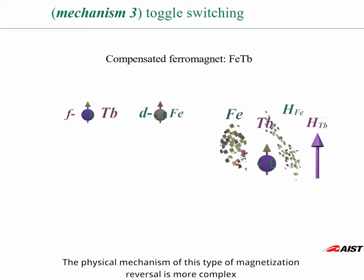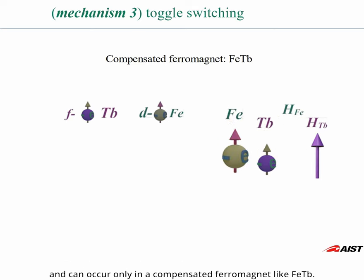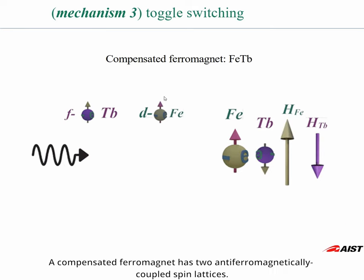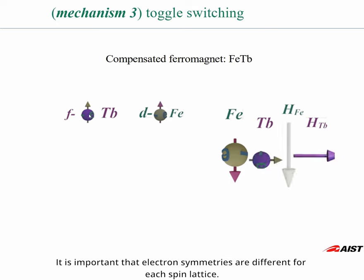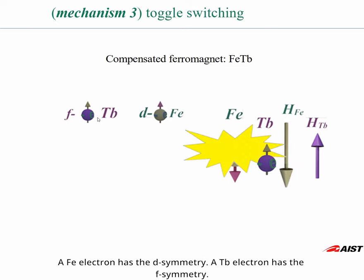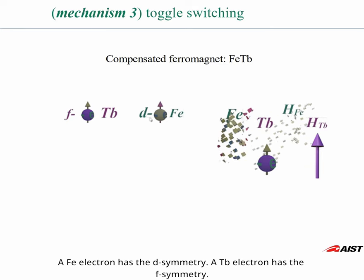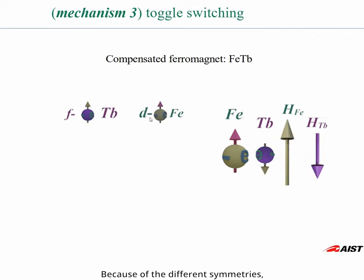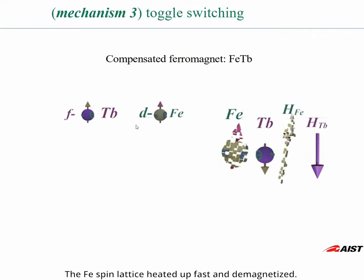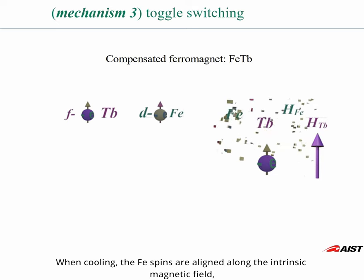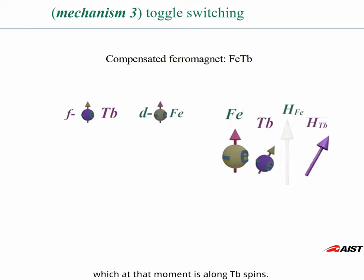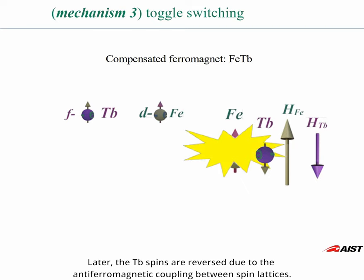The physical mechanism of this type of magnetization reversal is more complex and can occur only in compensated ferromagnets like iron terbium. A compensated ferromagnet has two antiferromagnetically coupled spin lattices. It is important that electron symmetries are different for each spin lattice. An iron electron has a D symmetry and a terbium electron has an F symmetry. Because of the different symmetries, each spin lattice has a very different heating rate by light. The iron spin lattice heats up fast and demagnetizes; in contrast, the terbium spin lattice heats only slightly and remains aligned. When cooling, the iron spins are aligned along the intrinsic magnetic field, which at that moment is along the terbium spins. Later, the terbium spins are reversed due to the antiferromagnetic coupling between spin lattices.